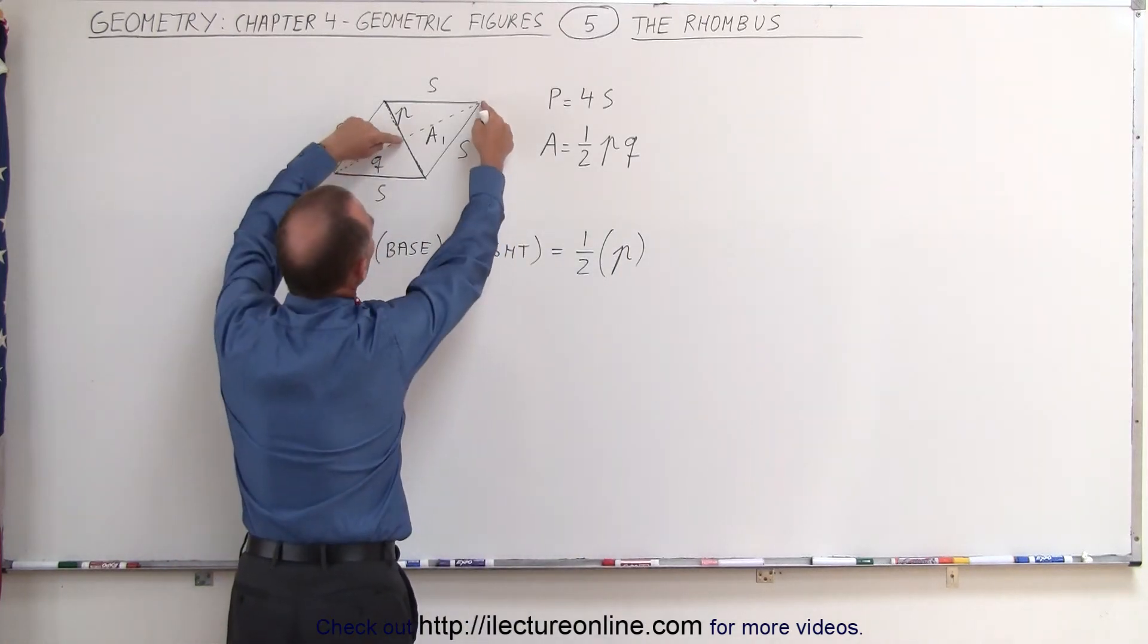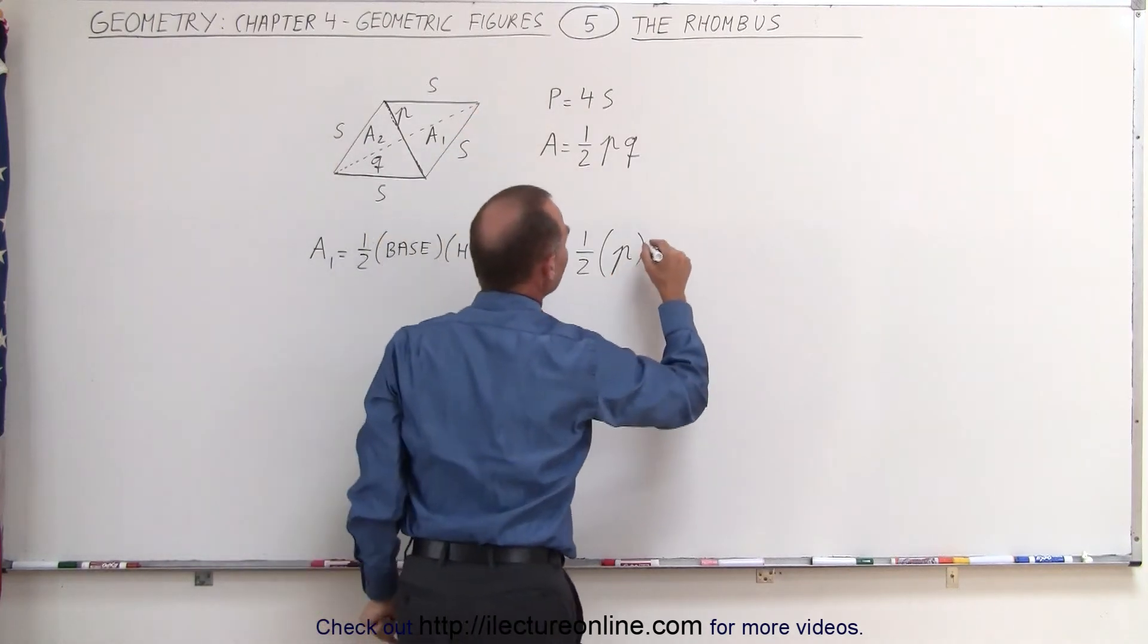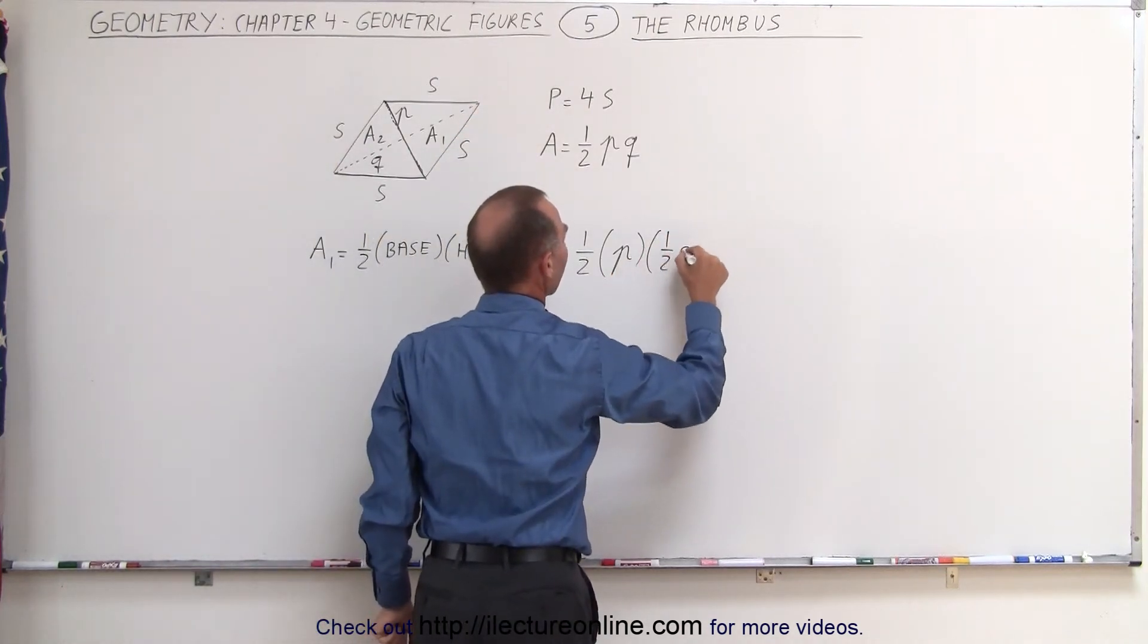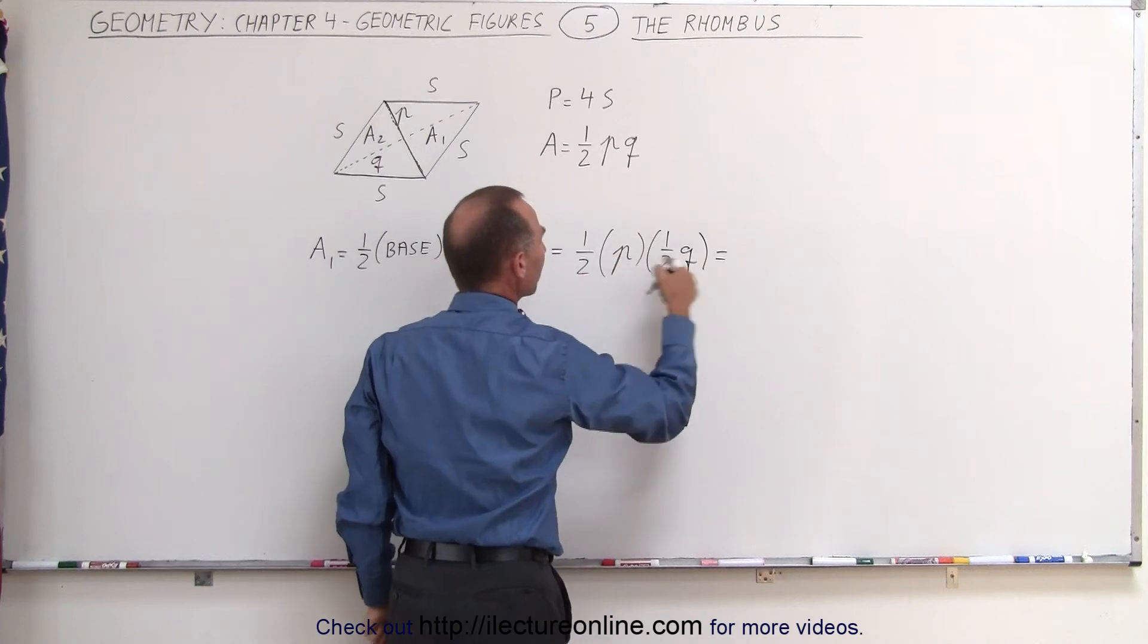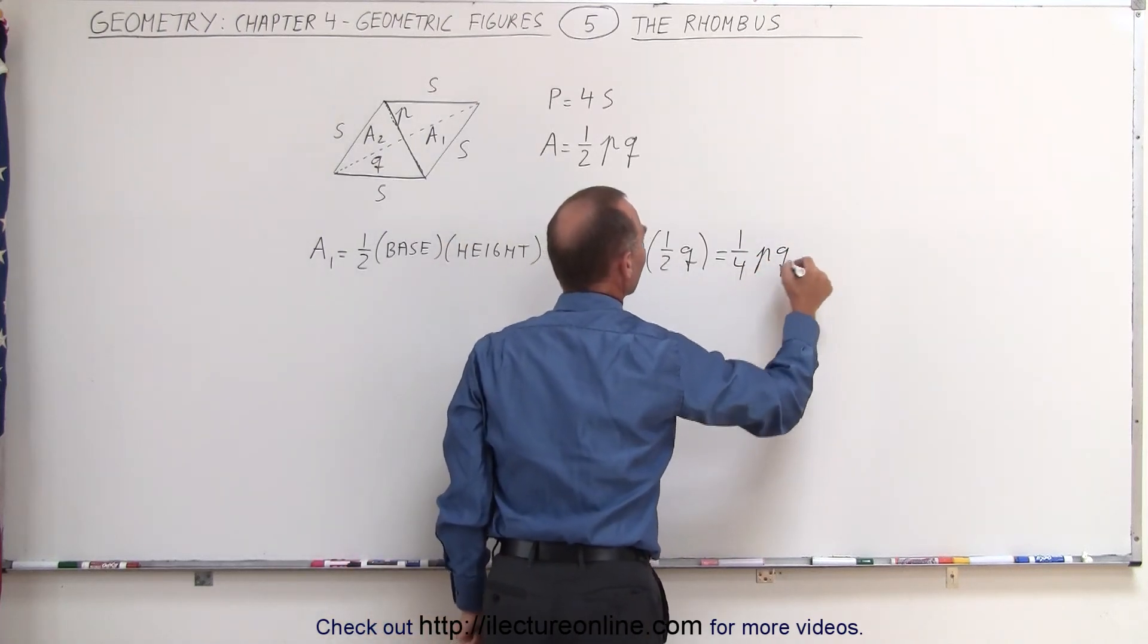and in this case the height will be half the length of the diagonal Q. So it would be times half Q. Which means when we multiply this together, we get one-quarter P times Q.